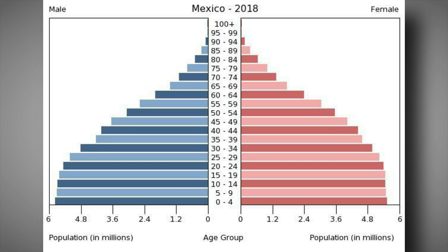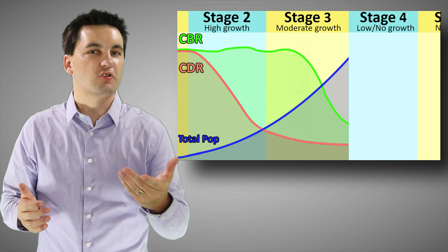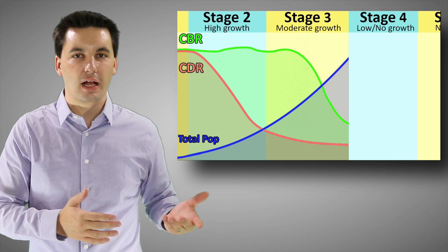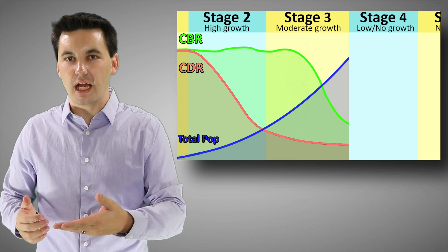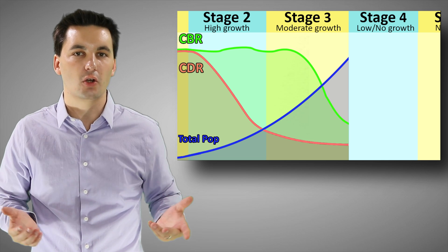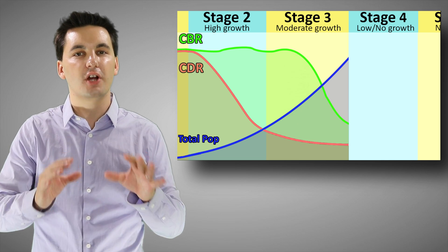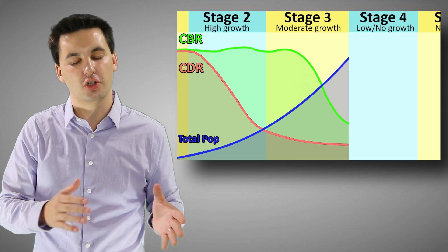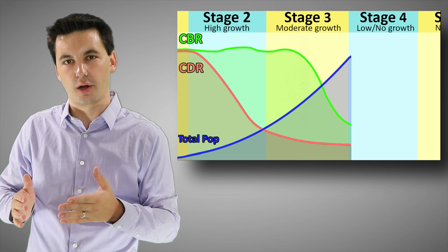Mexico today is a great example of a country that has moved from stage two to stage three, as their population growth starts to slow and they're gaining more medical advancements allowing people to live longer, while more opportunities for citizens are reducing large family sizes. As countries continue to develop, urbanize, and eliminate gender inequality, they transition into stage four.